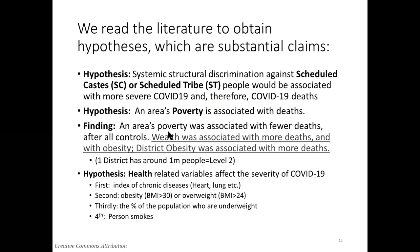Wealth was a very ambiguous result. In the study from 2020, wealth was associated with more deaths, as was obesity, and obesity was associated very strongly with more deaths. The wealth effect was much smaller once we had obesity — measured at the district level as the average percentage of people who are obese — included in the model. That is where I'm starting to hint at the hierarchical nature of our model.